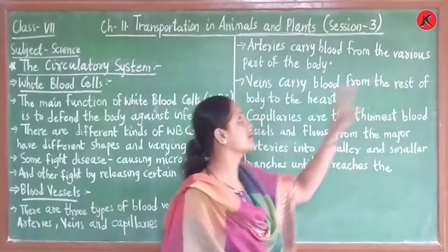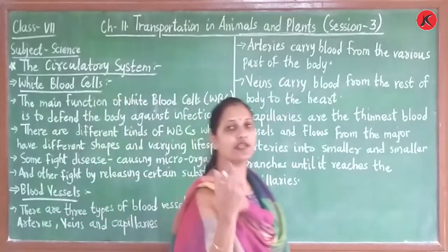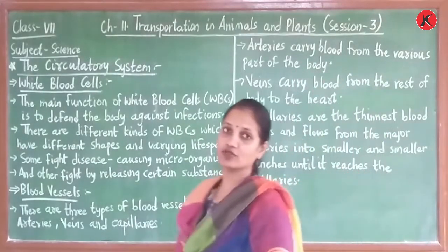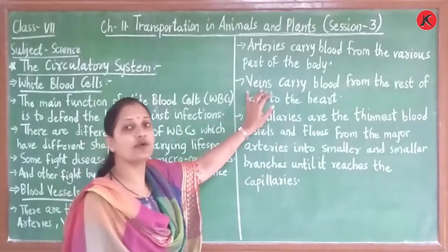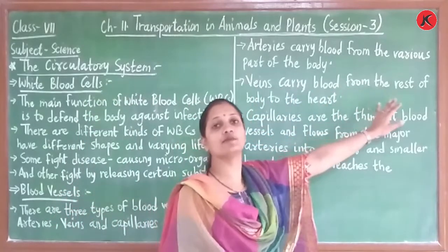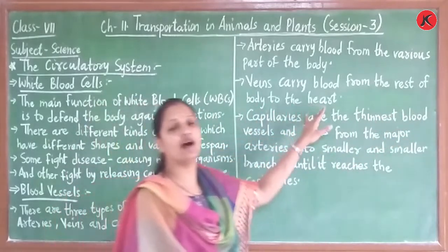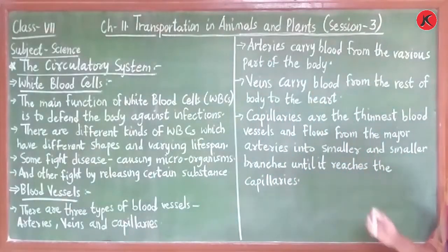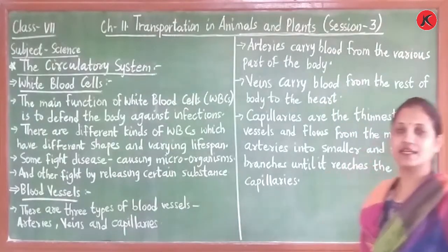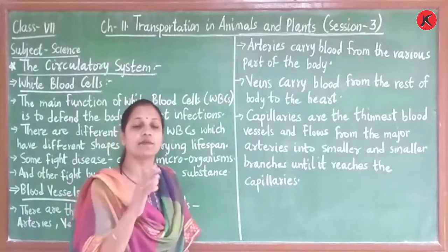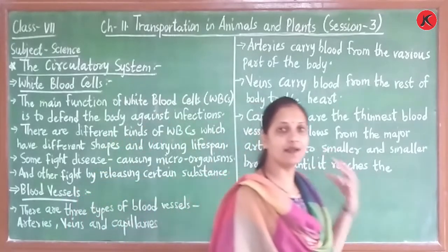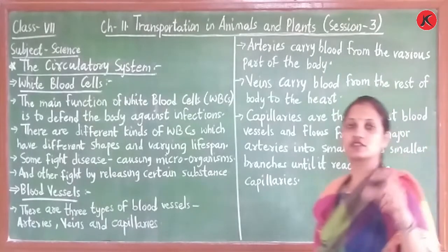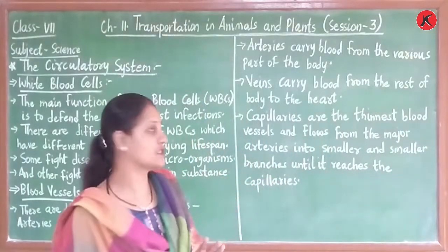Arteries carry blood from the heart to the various parts of the body. Arteries क्या करते हैं? पूरे body में blood flow arteries करते हैं — पूरे body को supply करते हैं। And veins carry blood from the rest of the body back to the heart. Veins पूरे body में से blood collect करके heart में लेके आते हैं। हमारे body के अंदर जो blood important है, वो है oxygenated blood। Arteries oxygen rich blood को पूरी body में transport करती हैं।